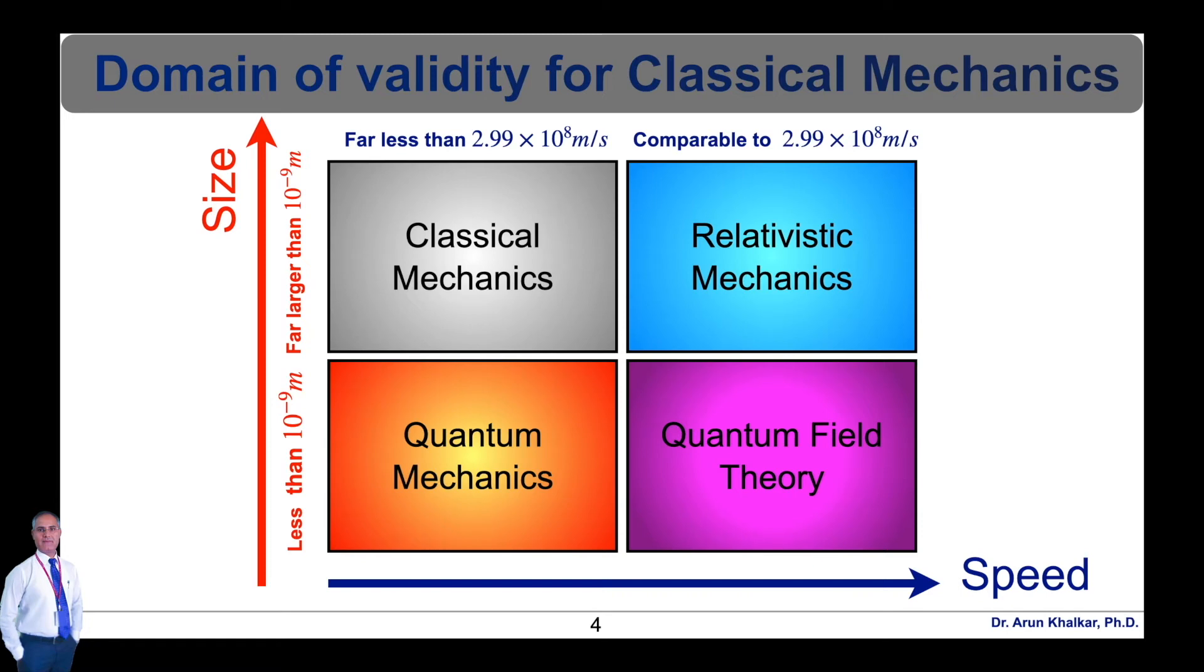However, until now there is no theory of quantum gravity unifying general relativity and quantum field theory that could be used when objects become extremely small and heavy. That's why these domains of validity are very important.